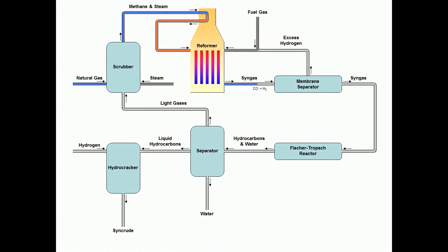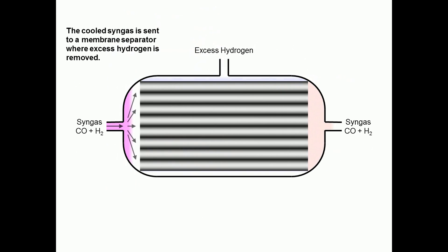The syngas is then sent to a membrane separator. In this membrane separator, the excess hydrogen is filtered and the ratio of hydrogen to carbon monoxide is adjusted.